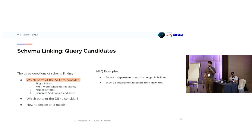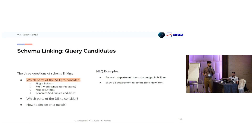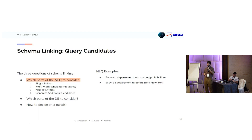In schema linking, we have to consider three questions: which parts of the question we will consider as query candidates, which parts of the database we will consider as database candidates, and how we are going to compare these two parts and decide if there is a match between them.